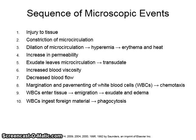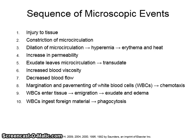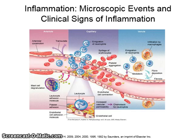This is also known as chemotaxis. White blood cells enter the tissue and ingest the foreign material. Please see pages 33 and 34 of your textbook for vocabulary definitions for chemotaxis, edema, emigration, erythema, exudate, hyperemia, margination, microcirculation, pavementing, phagocytosis, and transudate. This image of the microscopic events and clinical signs of inflammation is found on page 36, figure 2-1.